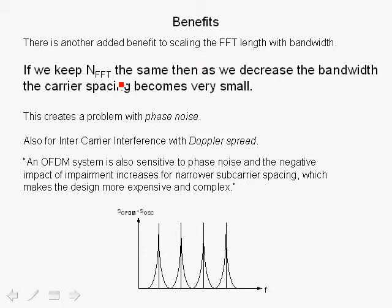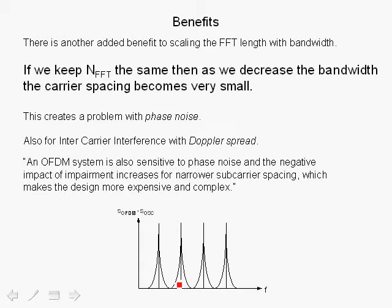Here's the problem: if we keep the number of FFT points the same and decrease the bandwidth, the carrier spacing becomes very small. For example, reducing bandwidth while holding FFT points constant makes carrier spacing very small. This creates a problem with phase noise in the system, and also causes intercarrier interference due to Doppler spread. As shown in the diagram — refer to the tutorial on phase noise in OFDM systems — as carriers become closer together, intercarrier interference due to phase noise increases considerably. By spacing carriers further apart, we reduce that interference significantly.